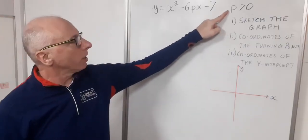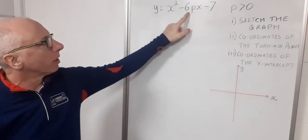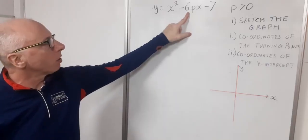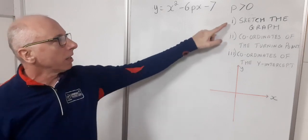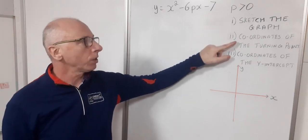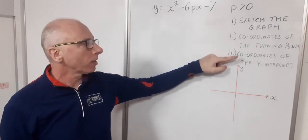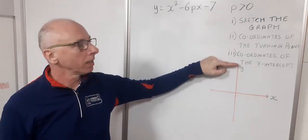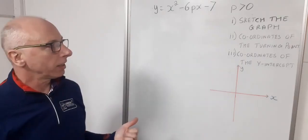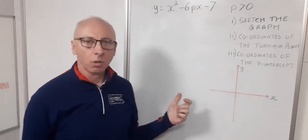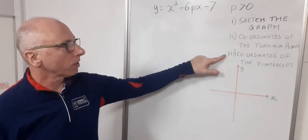The parameters we're given is that p is greater than 0. So this b term is always going to be a minus value. Then what we need to do is these three jobs here. Sketch the graph, coordinates of the turning point and the coordinates of the y-intercept. So I can't really sketch the graph just yet. I might want to do some algebra or work out one of these two things first.